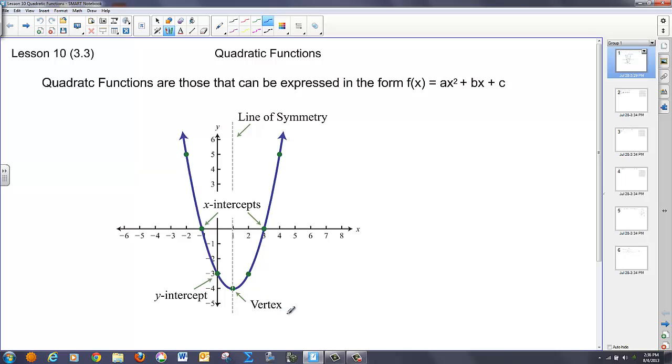These parabolas have vertices, which are either minimum values or maximum values, since they only dip once or rise once. Typically, we will have intercepts if they cross an axis, and we will have a line of symmetry which goes through the vertex.